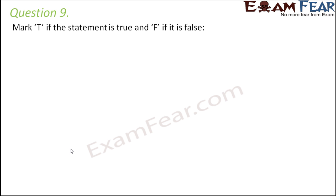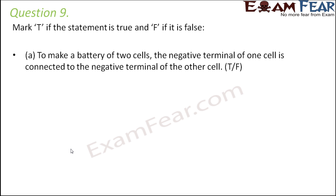Question number 9. Mark T if the statement is true and F if the statement is false. To make a battery of two cells, the negative terminal of one cell is connected to the negative terminal of the other cell. This is absolutely false because the negative terminal of one cell should be connected to the positive terminal of the next cell.